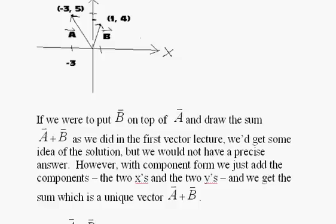However, with component form, we just add the components—the two x's and the two y's—and we get a sum, which is the unique vector A + B.